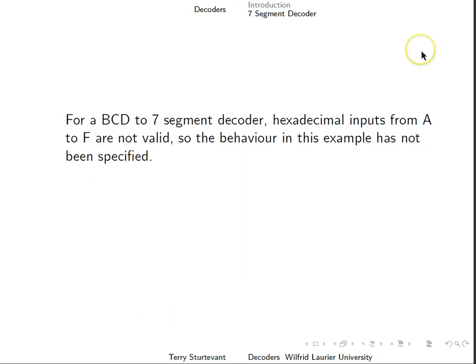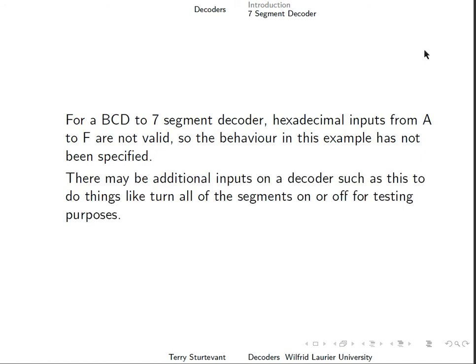For a BCD to 7-segment decoder, hexadecimal inputs from A to F aren't valid, so the behavior in this example hasn't been specified. There may be additional inputs on a decoder, such as this, to do things like turn on all of the segments, or turn off all of the segments, for testing purposes.